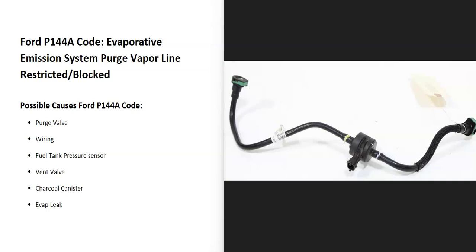Today I'll talk about a Ford with the P144A code, what it is and how you go about fixing it. The P144A code means Evaporative Emission System Purge Vapor Line Restricted/Blocked. Modern vehicles have an EVAP system that takes all the gas vapors from the gas tank and feeds them back into the engine to get burnt off so they don't escape into the atmosphere.